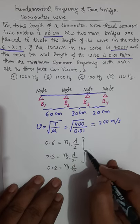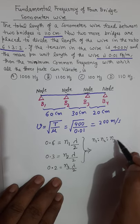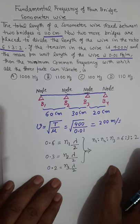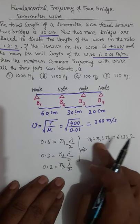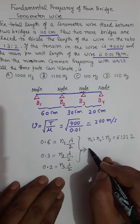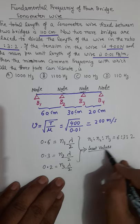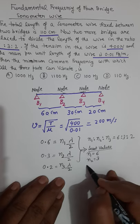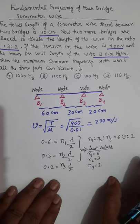Using mathematics, you will find that n₁ : n₂ : n₃ = 6 : 3 : 2. Since n₁, n₂, n₃ must be integers in this ratio, the least possible values are n₁ = 6, n₂ = 3, and n₃ = 2.